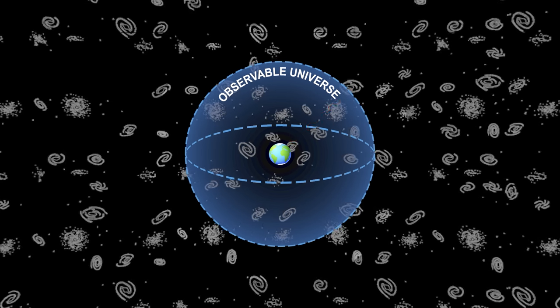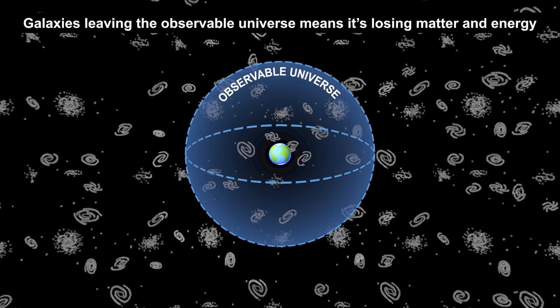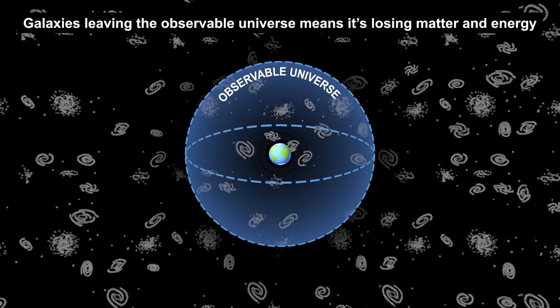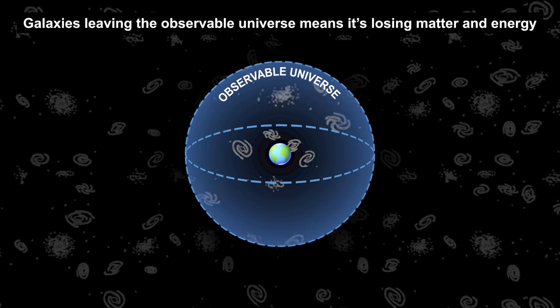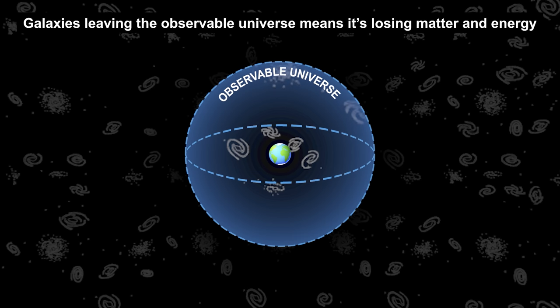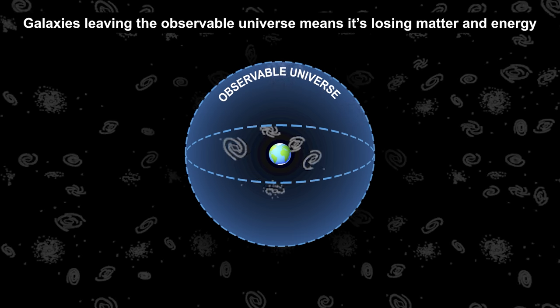If we consider just the observable universe as an isolated system, then we are clearly losing matter. And due to E equals MC squared, we are also clearly losing energy from our system, when galaxies leave our observable universe.